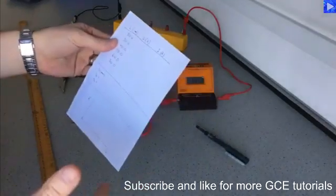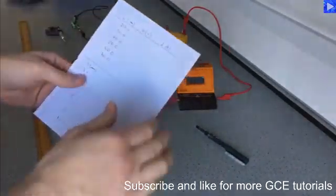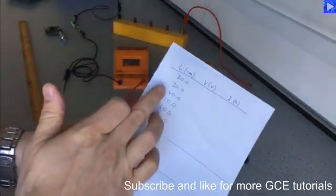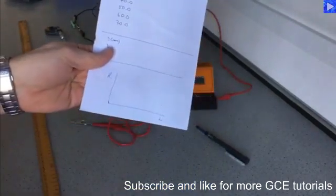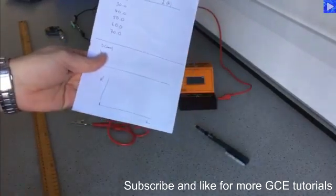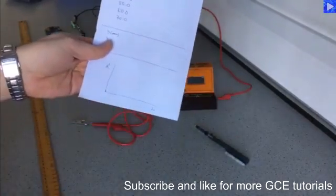From voltage and current I can work out resistance. Then I will have a series of length data and resistance data which I can then plot a graph of resistance against length. The gradient of that line can then be used to work out the resistivity.